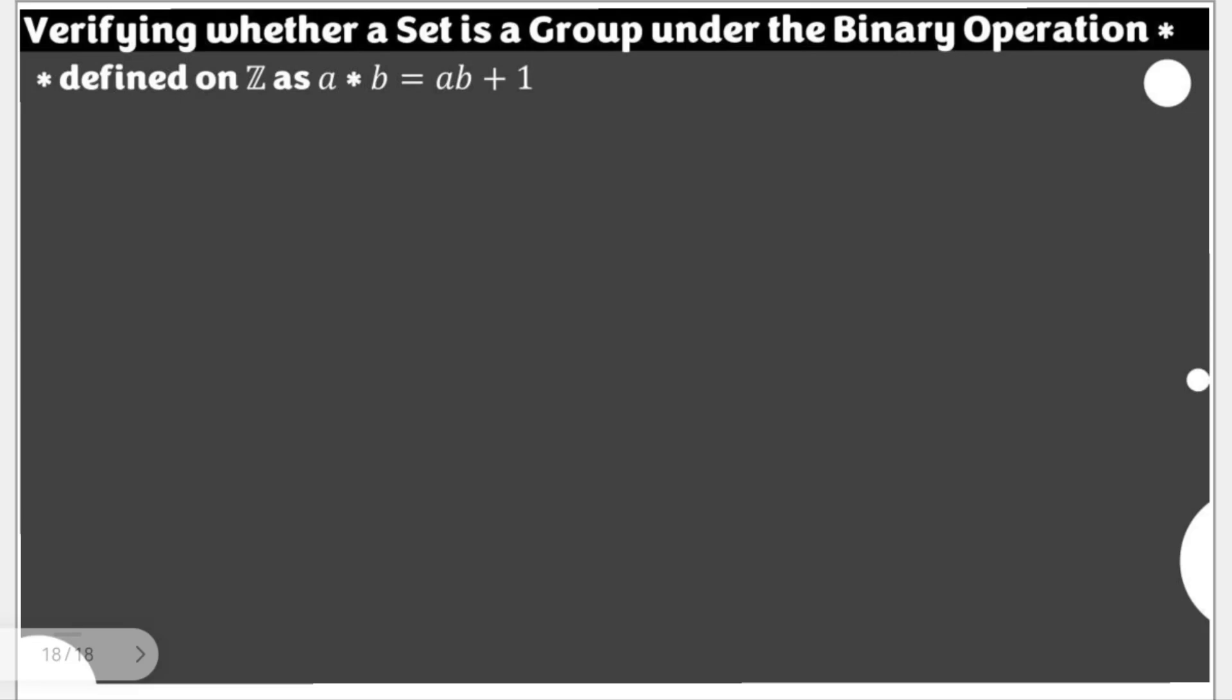We are already assured here that the operation is binary. But if we would like to remind ourselves, for a star operation to be binary, first and foremost, the set should be non-empty, and then the application of the operation star on the given set is actually closed. But we will not be showing the closure property here.